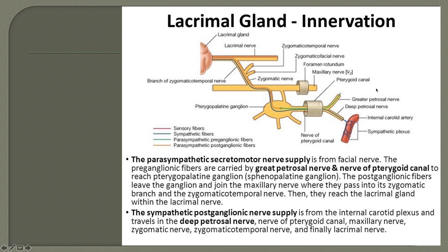The greater petrosal nerve arises from the geniculate ganglion and passes through the hiatus of the greater petrosal nerve to the anterior surface of the petrous temporal bone — the tegmen tympani — and then descends down medially toward the foramen lacerum.